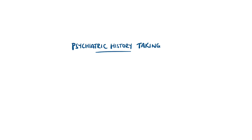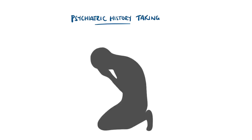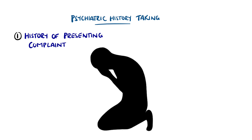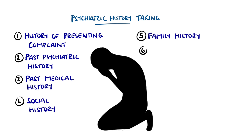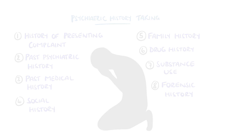There are some features of taking a psychiatric history that differ from other histories in medicine. We'll look at the main differences as well as some general tips. A fairly typical model is one of presenting complaint and its history, past psychiatric and medical problems, social and family history, drug history, substance use and forensic history, which is all combined with a mental state examination. So it can be tricky to remember each point, and you need a simple way to organise your history.